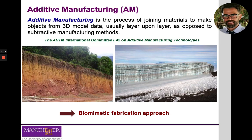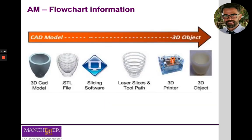This is completely different from conventional subtractive methods, where you start with a block of material and remove material until you obtain your final part. Very often, additive manufacturing processes are also classified as biomimetic approaches because in many ways they replicate processes found in nature, like the deposition of soils or the growth and shape of trees. That similarity with natural processes awards them the biomimetic classification.